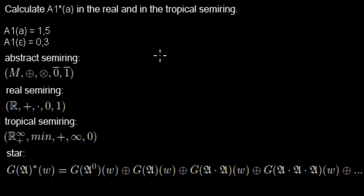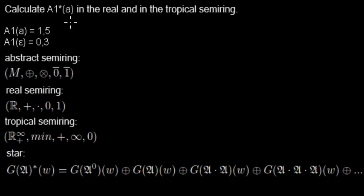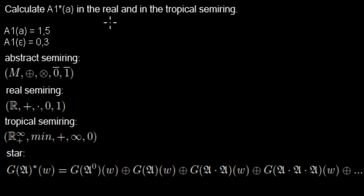In this video I'd like to show you how to calculate A-star — the weight of A-star in this automaton. You probably remember from regexes that A-star includes zero repetitions of A, so epsilon, and one A, and concatenation of two A's, and so on. All of this together is the set of A-star.